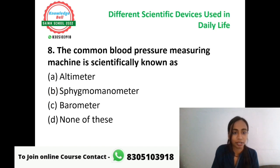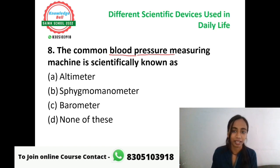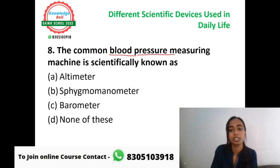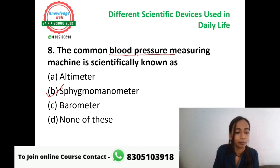Question number eight: the common blood pressure measuring machine is scientifically known as what? The blood pressure machine seen in clinics and doctors' offices — what is its scientific name? Scientifically, this device is called a sphygmomanometer. Option B, sphygmomanometer, is the correct answer. The common blood pressure measuring machine is scientifically known as sphygmomanometer.